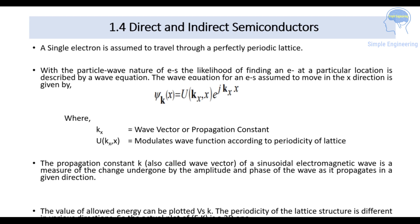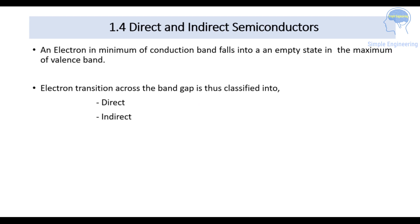The propagation constant k, also called the wave vector of the sinusoidal electromagnetic wave, is a measure of the change undergone by the amplitude and the phase of the wave as it propagates in a given direction. The allowed energy values can be plotted versus k, and because the periodicity of the lattice structure differs in various directions, the actual plot is between E and k and is a 3D one — the E-k diagram.